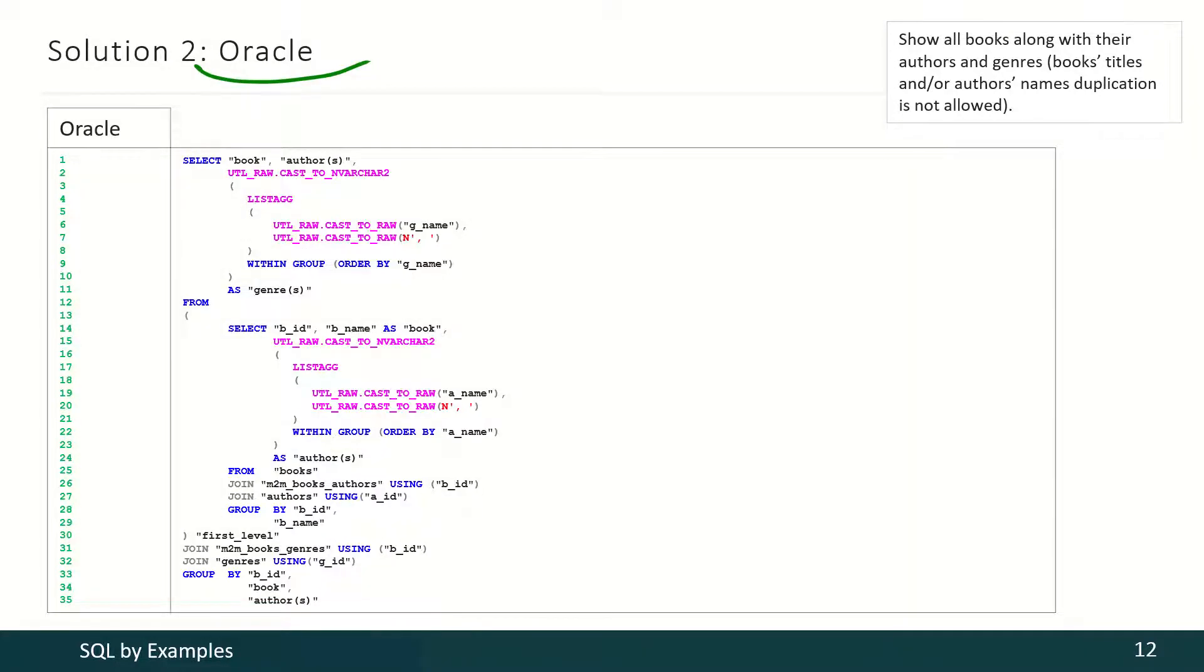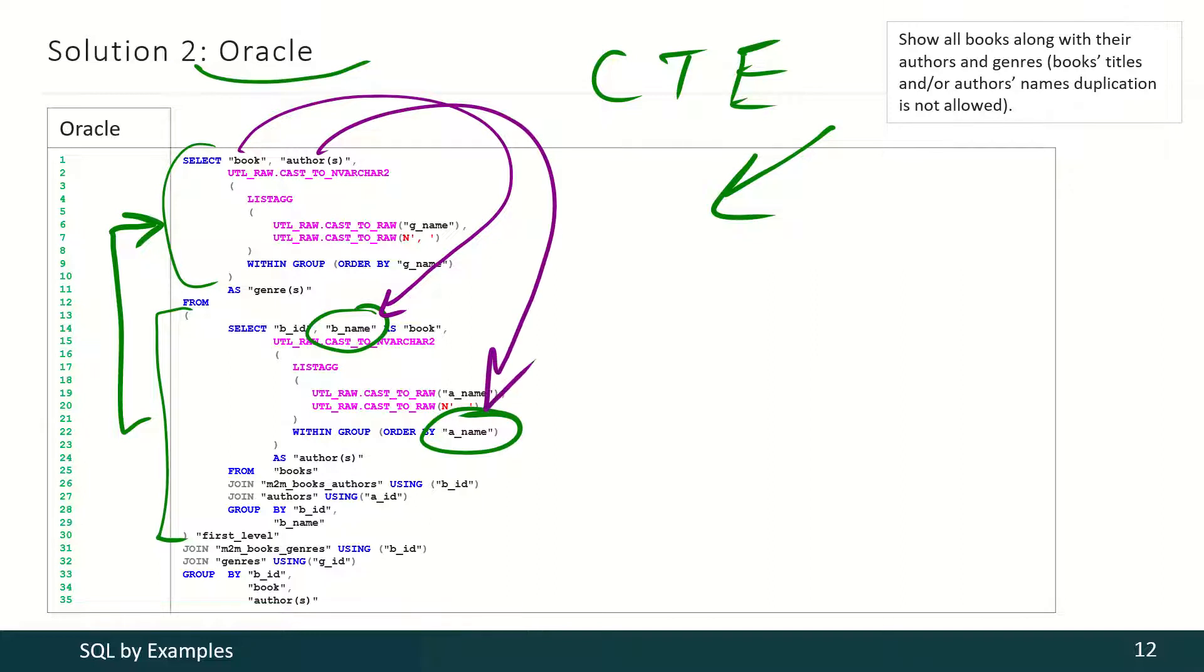In Oracle we may follow the Microsoft SQL Server logic with common table expression, or we may use another approach. Here we see subquery. And that query combines book names and author names. And then the result of that subquery is used as data source for the main query. Here we select that information about book, that information about book authors. And here we add information about book genres.